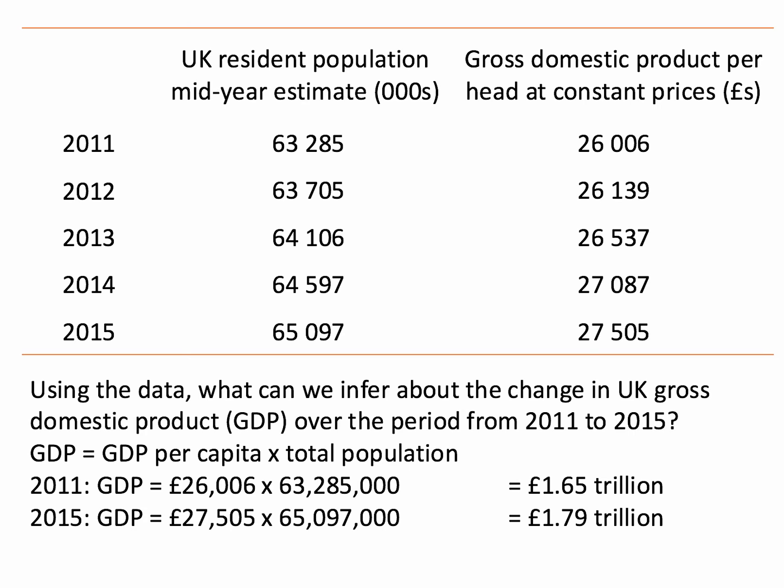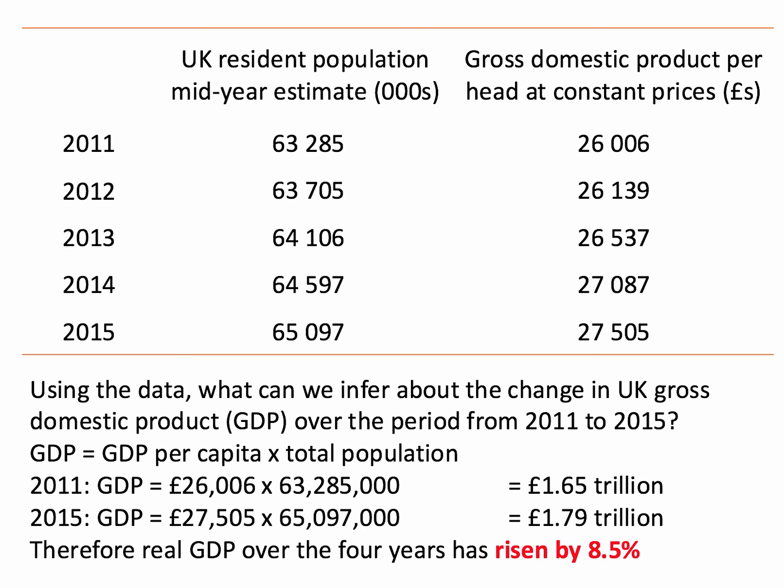You've inferred that there's been a change in GDP brought about by higher per capita incomes and quite a sizeable increase in population. In the exam, you just want to nail this — get the calculator out and work out that change as a percentage change. It's gone up by 8.5%: the change divided by 1.65, giving 8.5% over the four-year period from 2011 through to 2015.